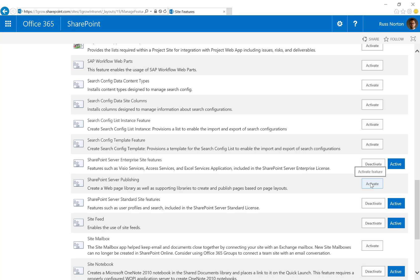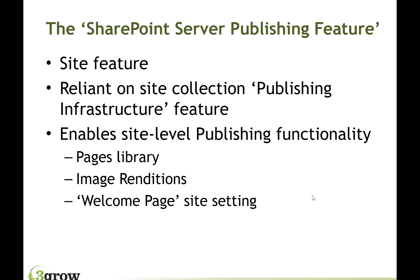While we're waiting for the site level feature to be activated, let's talk about its benefits. This site level feature is reliant on the site collection level publishing infrastructure feature — if we tried to activate the site level feature first, we would receive an error message. What this feature will do is create our pages library, which is designed to manage our publishing pages. It will allow us to create image renditions, which are essentially different sized versions of the images we upload into our asset libraries. We'll also get a new welcome page site setting, which allows us to set our new publishing home page as the site's homepage.